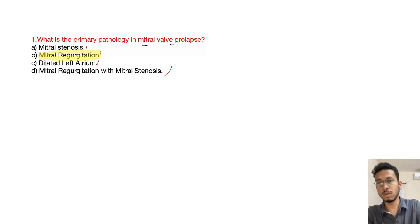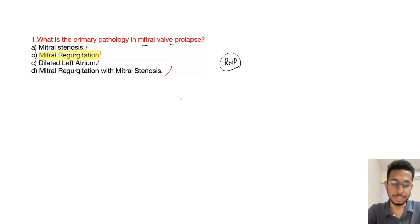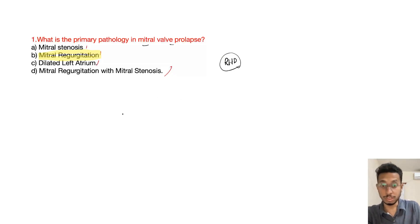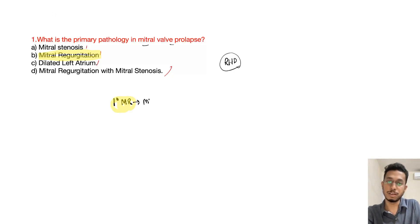What is the most common cause of mitral regurgitation? In India and developing countries, the most common cause of mitral regurgitation is rheumatic heart disease — so common that the first, second, and third most common causes are all rheumatic heart disease. However, if the question asks for the most common cause of primary mitral regurgitation, the answer is mitral valve prolapse.